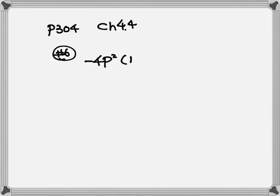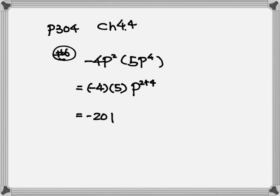Let me write this clear. So it'll be 5p4. From chapter 4.1, you multiply number times number — negative 4 times 5 — then p times p. Bases are the same, so you write down one base and combine the exponents. So the answer will be negative 20p to the 6th.